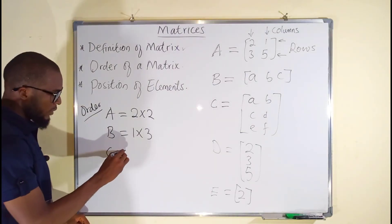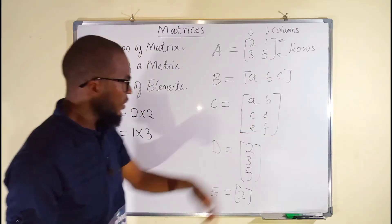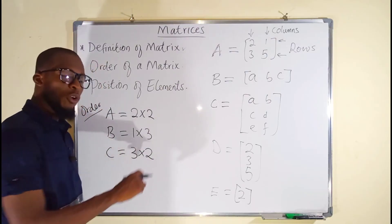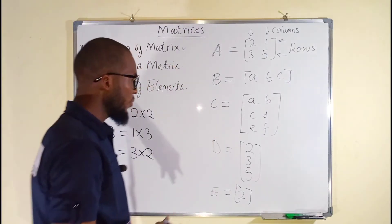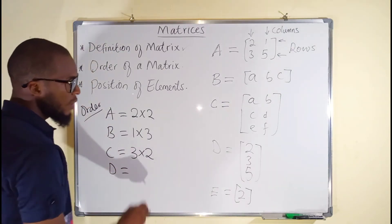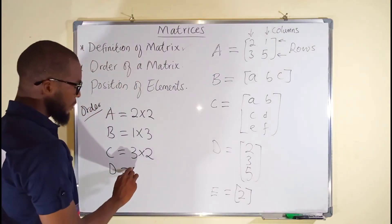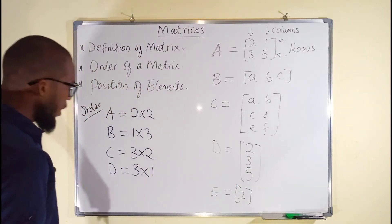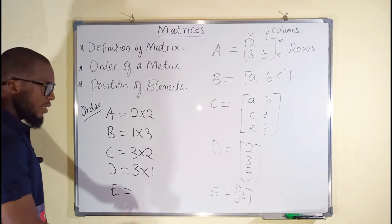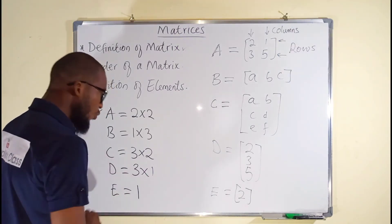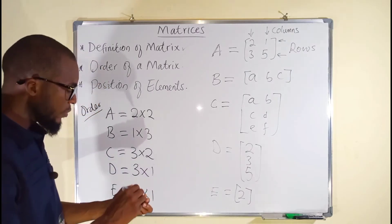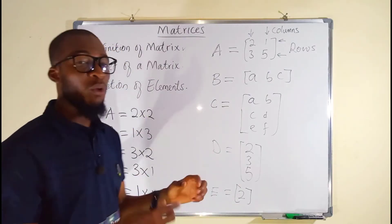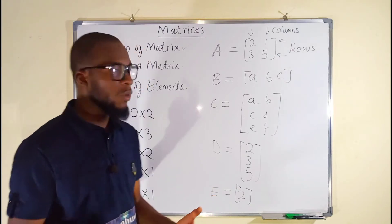Matrix C — we are talking about orders — is three by two. Remember, always start from the rows followed by the columns. Matrix D is three by one because it only has a single column. And last but not least, matrix E has only one row and one column, so it is order one by one. This is all about order of a matrix — it's just the dimension according to the number of rows and columns.